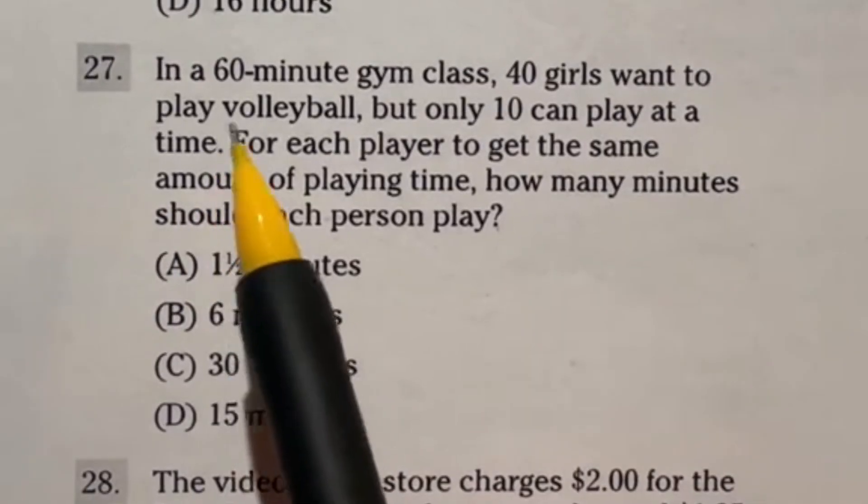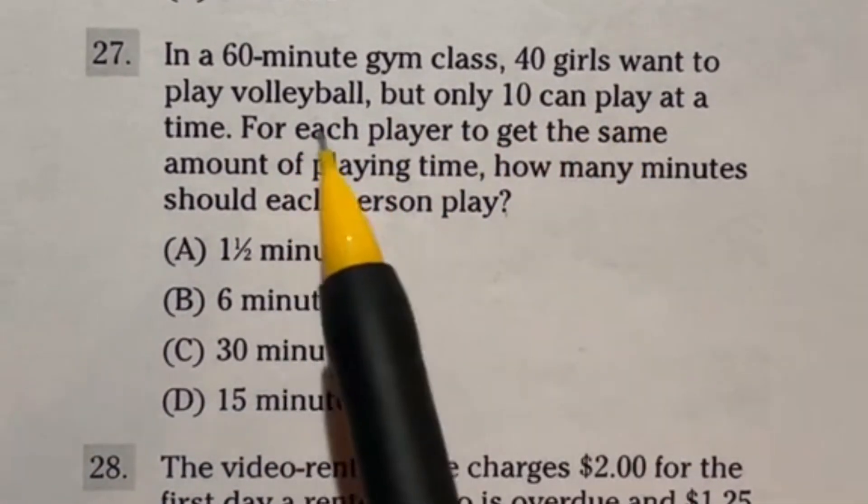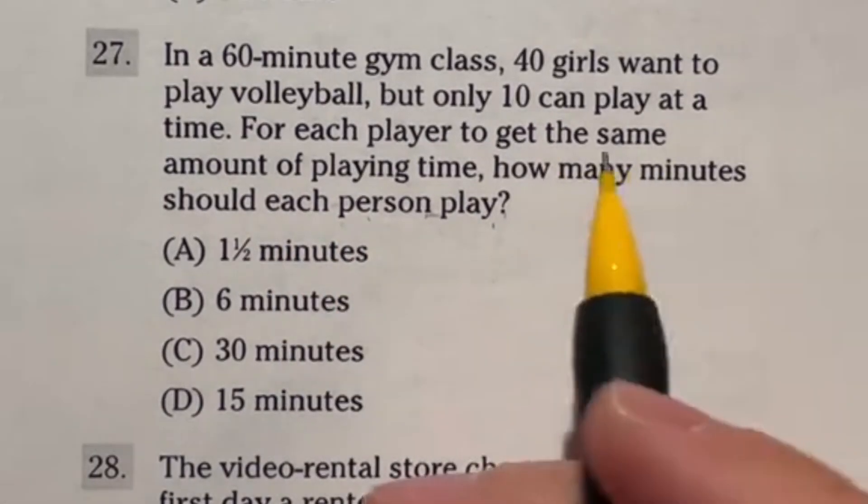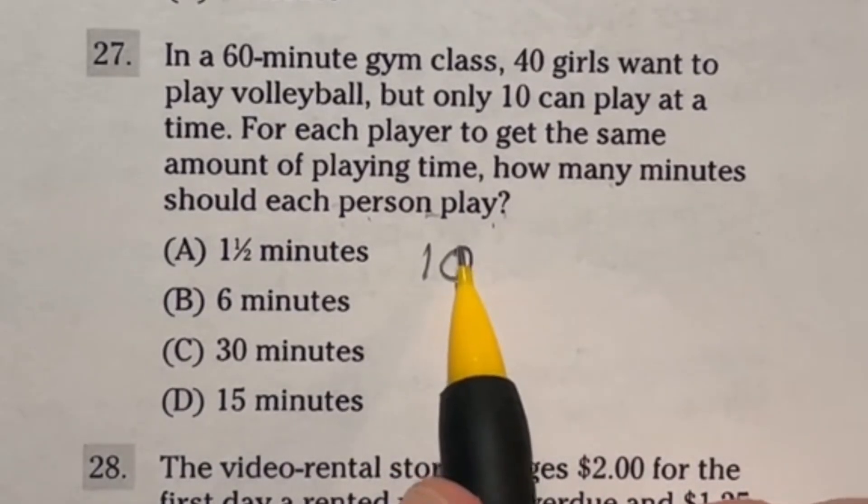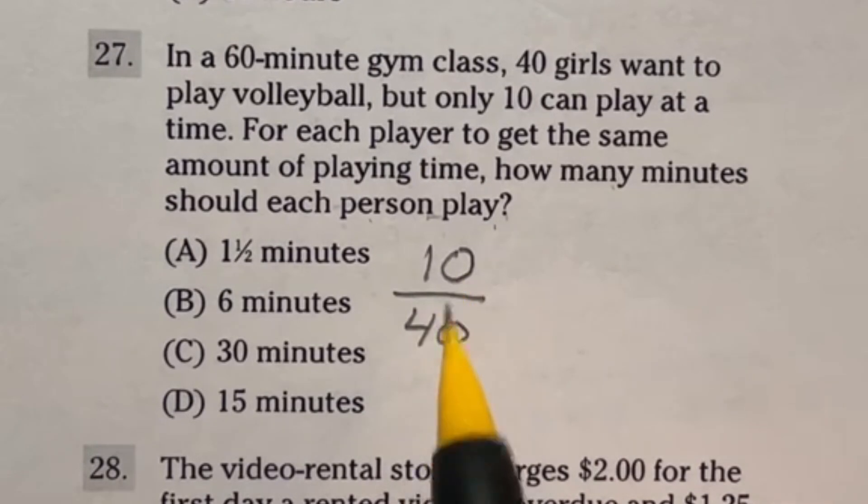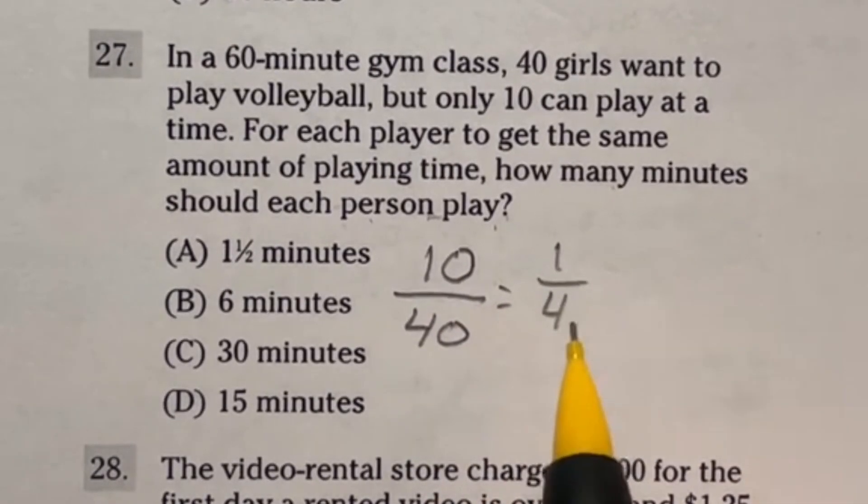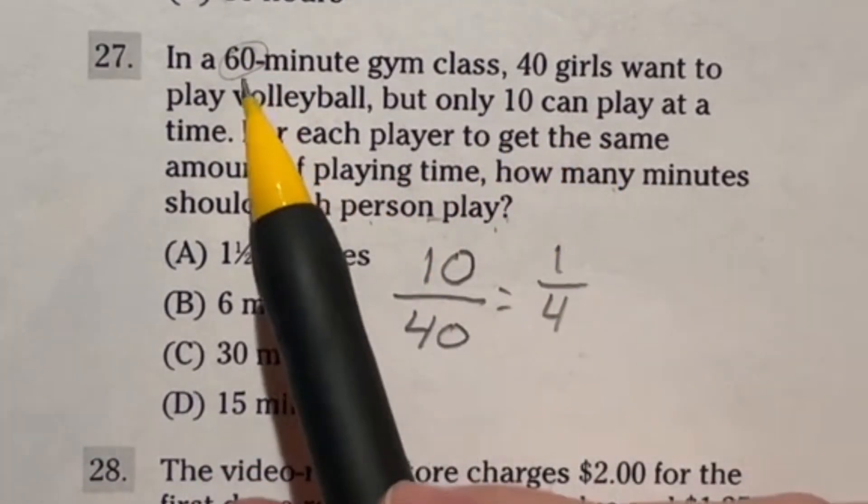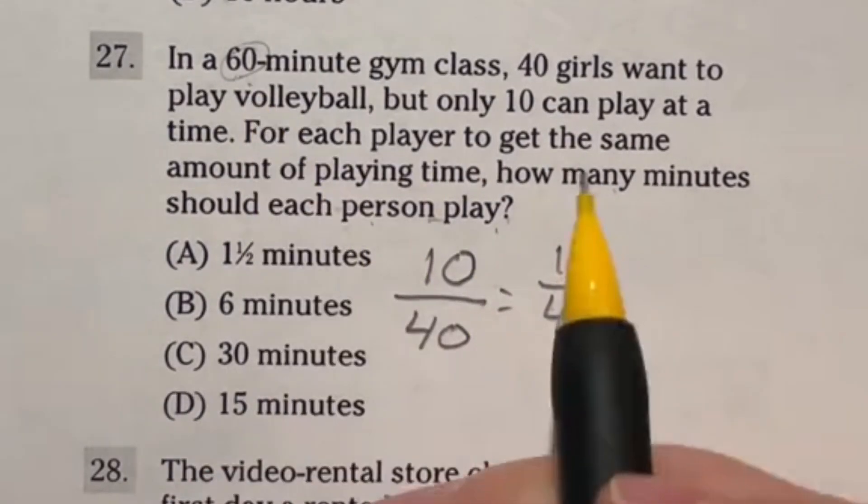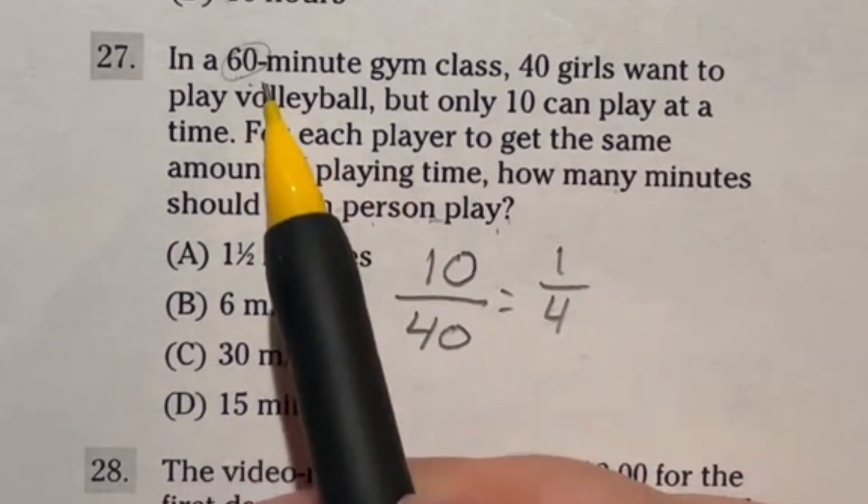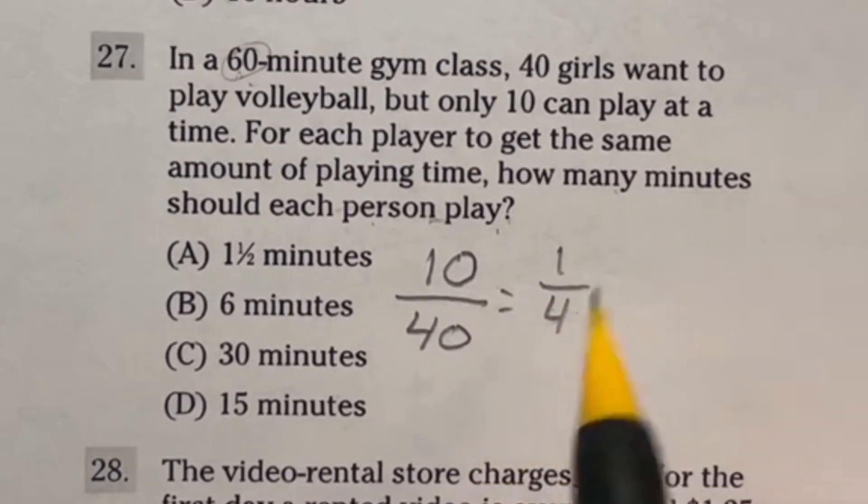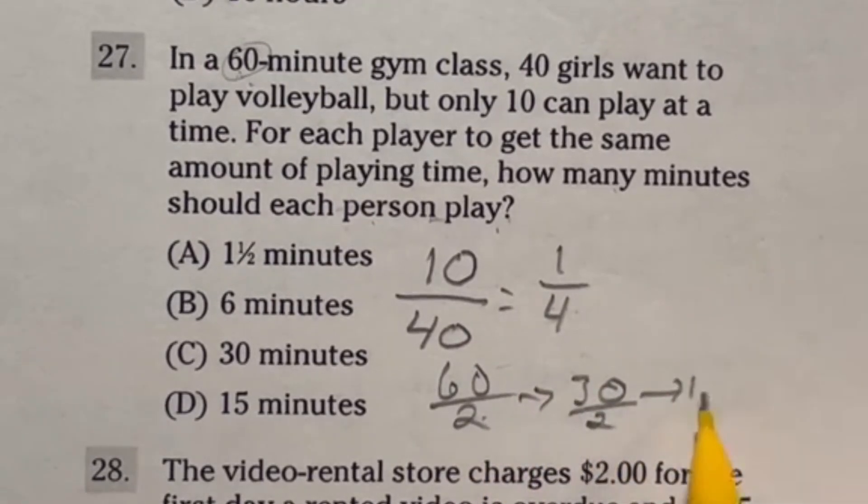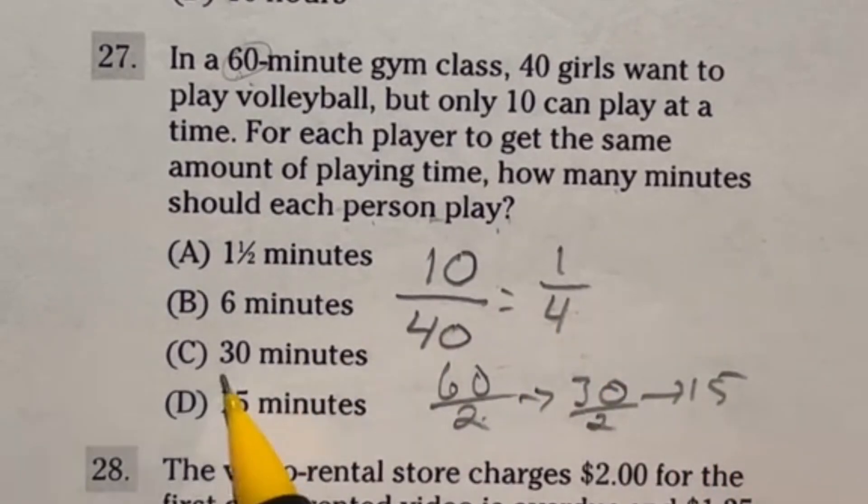Number 27 on the ASVAB shouldn't be anything too tricky. It says here that in a 60-minute gym class, 40 girls want to play volleyball. But only 10 can play at a time. For each player to get the same amount of playing time, how many minutes should each person play? So in this case, only 10 of these girls can be playing at a time. That's out of the 40 girls total. Now, if I divide both the top and bottom by 10, that's going to tell me that one-fourth of these girls can play at a time. So if we're going to be splitting this guy into each girl evenly, then that means that I need to find out what is one-fourth of 60, because then each girl will get one-fourth of that time, considering one-fourth of them can play at a time. So looking at this, what is 60 divided by 4? Well, if I cut 60 in half, that's going to take me down to 30. And then if I'm dividing by 4, it's just cutting it in half again. So that's going to bring me down to the 15, meaning that each girl is going to get 15 minutes. Our answer here is D.